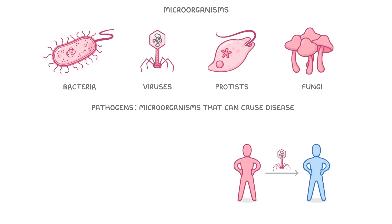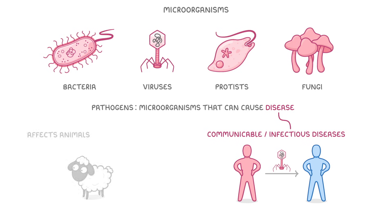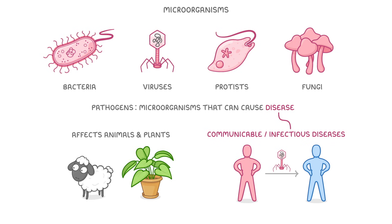As the pathogens can spread from person to person, the diseases they cause are known as communicable or infectious diseases, and they affect both animals and plants. Over the next three videos, we're going to take a closer look at each of these four types of pathogens, and some examples of the particular diseases that they can cause.